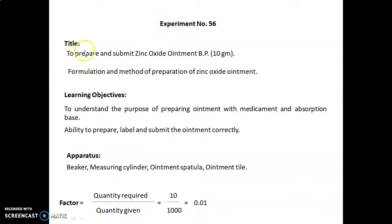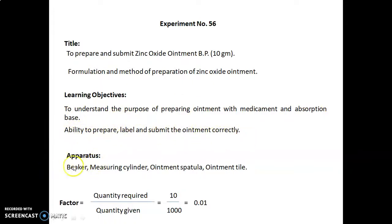In the next session, we will look at Experiment Number 56. The title of this experiment is to prepare and submit zinc oxide ointment BP (British Pharmacopoeia) — 10 gram formulation. Learning objectives are to understand the purpose of preparing ointment with medicament and absorption base, and the ability to prepare, label, and submit the ointment correctly. Apparatus required: beaker, measuring cylinder, and ointment spatula.